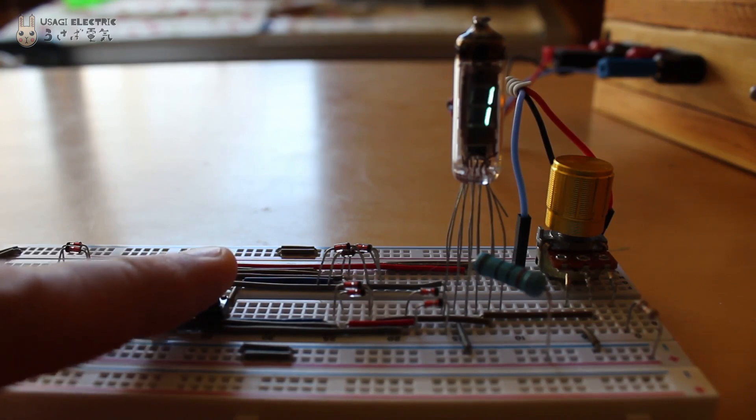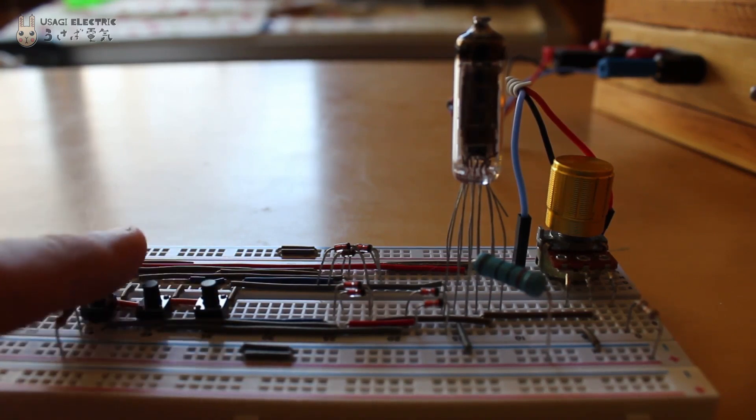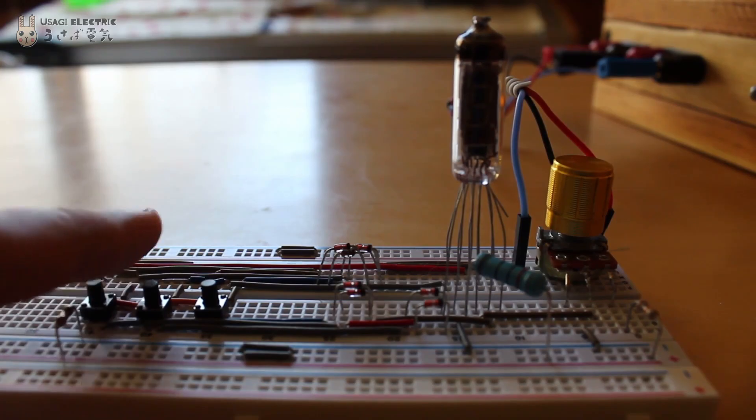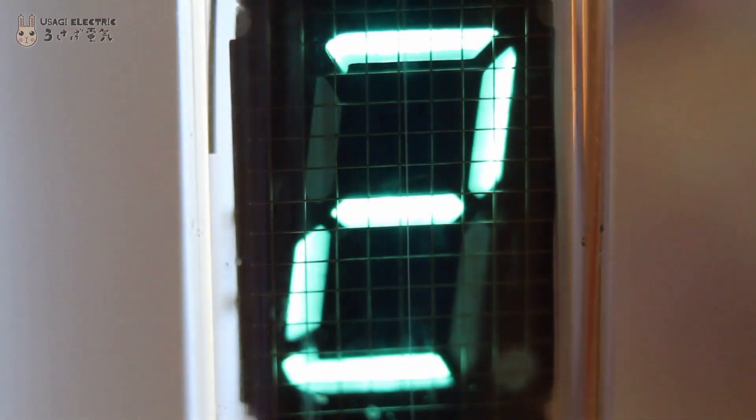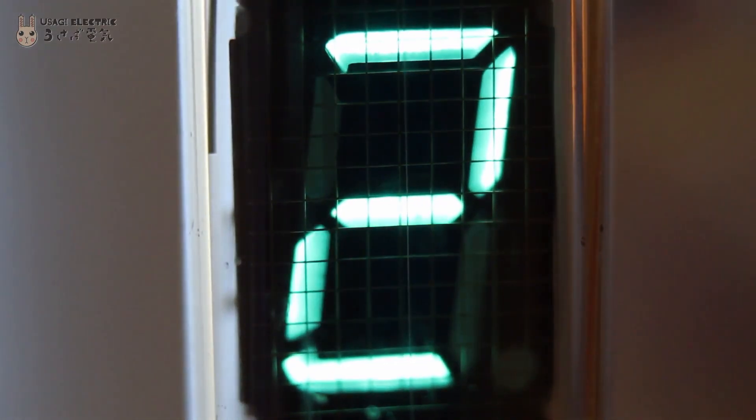Here we can see an IV3A7 7 segment VFD displaying various numbers as the switches are turned on and off. Each switch applies voltage to specific segments, allowing them to illuminate.